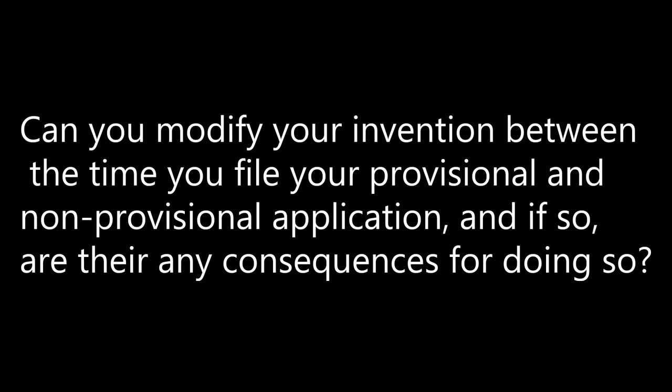Can you modify your invention between the time you file your provisional and non-provisional application, and if so, are there any consequences? Yes, you can modify your application between the provisional and the non-provisional. You only get the priority date of the provisional for whatever was described there — the modifications will get the filing date of the non-provisional. I have clients do that all the time. They file a provisional application, make advancements during the year between filings, and we generally incorporate those advancements into the application that ultimately gets filed.